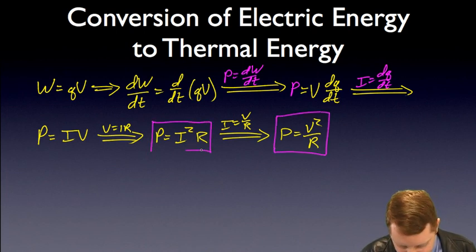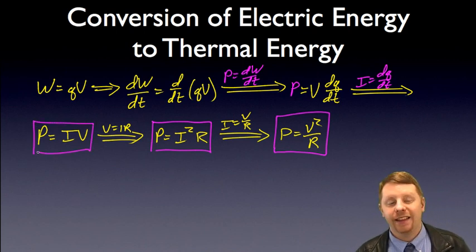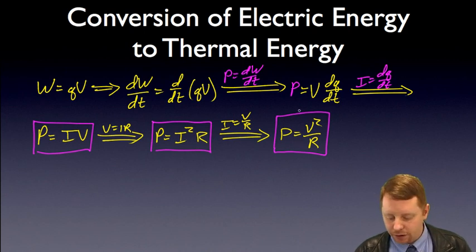And, typically, what we're doing in that case is converting electrical energy, oftentimes, into thermal energy. It can be other types of energy, but, typically, we start off with thermal as the most basic. Power equals I times V. Power equals I squared R. And, power equals V squared over R.